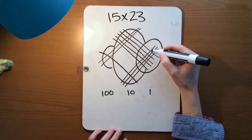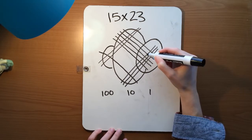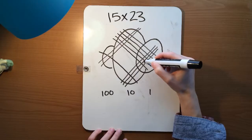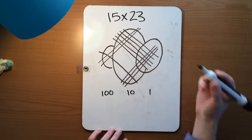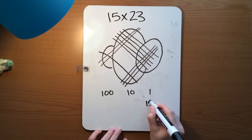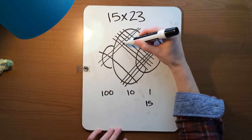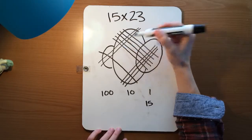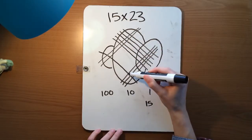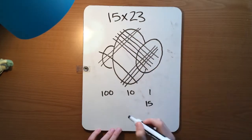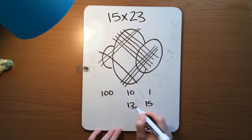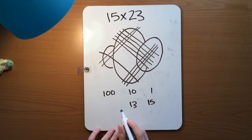So counting up the intersections, we have 1, 2, 3, 4, 5, 6, 7, 8, 9, 10, 11, 12, 13, 14, 15 for the ones place. In the tens place, we have 1, 2, 3, 4, 5, 6, 7, 8, 9, 10. Don't forget to come to the bottom. 11, 12, 13 in the tens place. In the hundreds, you can see we have 2.